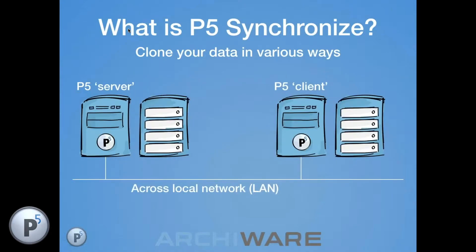Looking at cloning in terms of network topology: the simplest example has P5 running on the left-hand box with storage attached, and another host running P5 as a client on the right with storage attached, connected over a local area network. In this single-office scenario, the customer replicates from their live P5 server to the P5 client — both might be file servers.